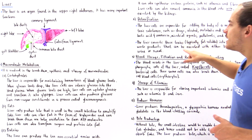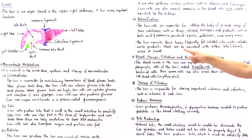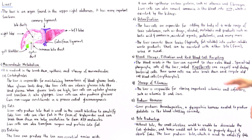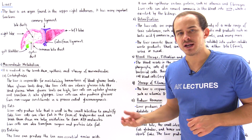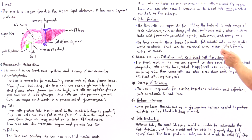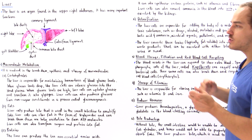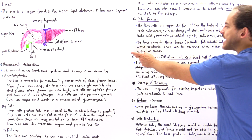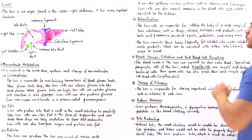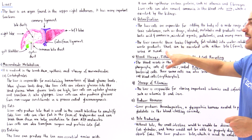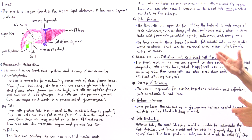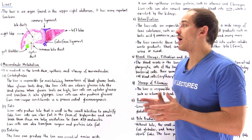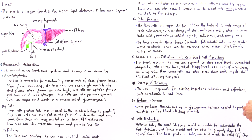The liver converts these toxins, which are usually fat-soluble, into water-soluble waste products that can easily be excreted in bile — which eventually ends up in feces excreted by the large intestine — in urine excreted by the kidneys, or in sweat excreted by our skin.